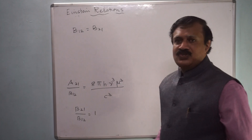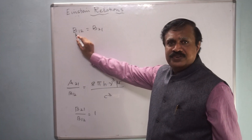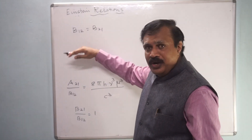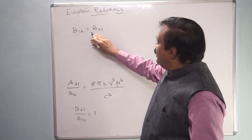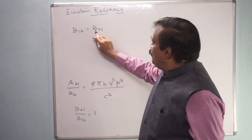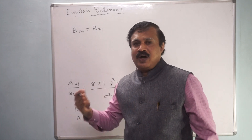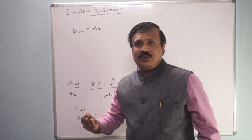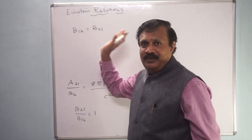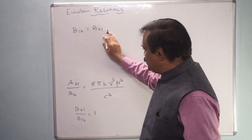The physical meaning of B12 = B21 is that the probability of absorption is equal to the probability of stimulated emission. That is the key result you have to understand from this derivation.